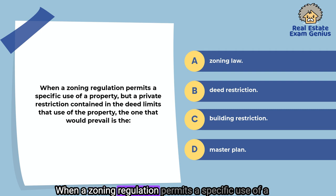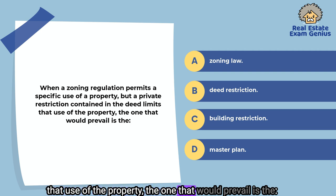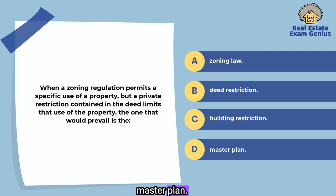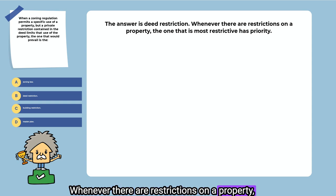When a zoning regulation permits a specific use of a property, but a private restriction contained in the deed limits that use of the property, the one that would prevail is the: zoning law, deed restriction, building restriction, or master plan. The answer is deed restriction. Whenever there are restrictions on a property, the one that is most restrictive has priority.